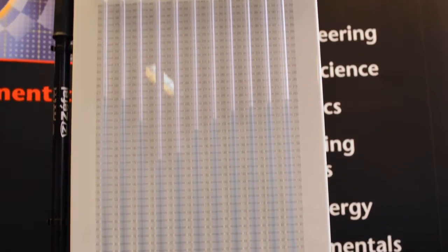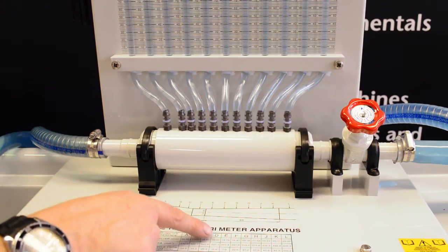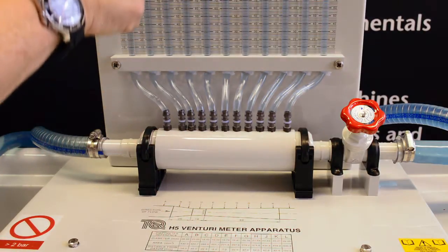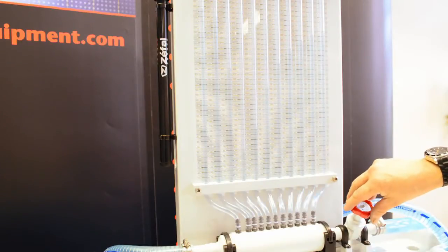The H5 has many pressure tappings connected to water manometers which allow for a full study of the pressure distribution along a convergent, divergent passage.